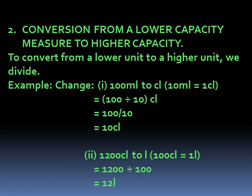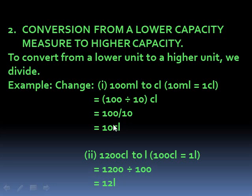Now let's move to conversion from a lower capacity to a higher capacity. When we convert from a lower unit to a higher unit, we divide. Example 1: Change 100 milliliters to centiliters. How many milliliters make one centiliter? It's 10. So 100 divided by 10 gives us 10 centiliters.